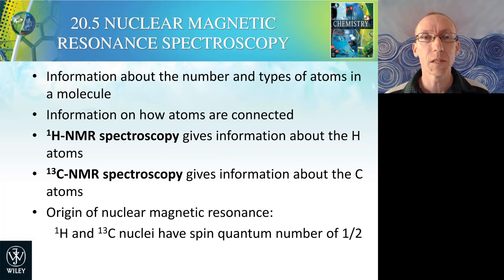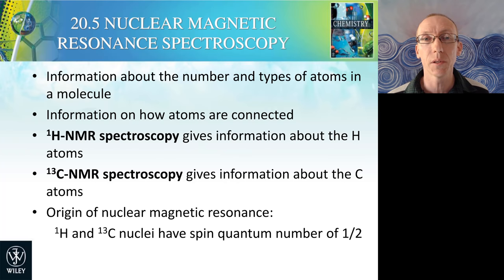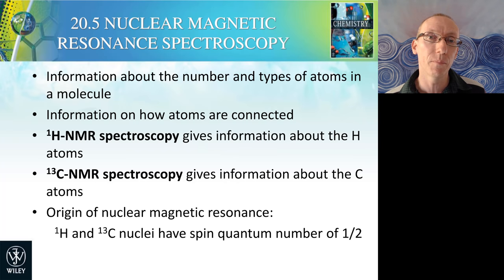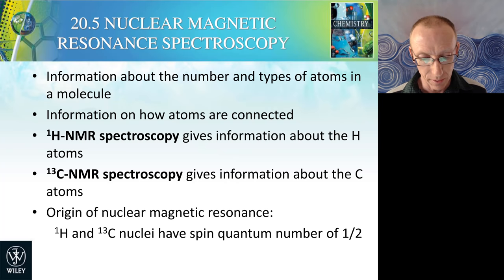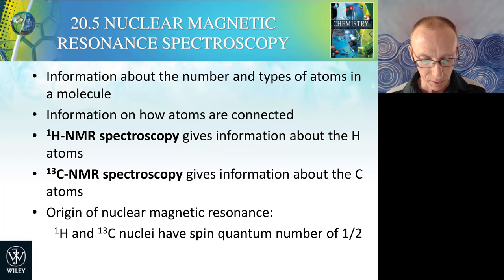Let's talk about nuclear magnetic resonance spectroscopy, or NMR spectroscopy for short. It's a really powerful technique that lets us gain information about the number of atoms and the type of atoms within a molecule. It's really important for organic chemists because it tells us about protons, or 1H nuclei, and about carbon nuclei, and about how those atoms are connected. Because organic chemistry is centered on molecules that contain carbon and hydrogen, it's really useful that we can look at those nuclei using this technique.